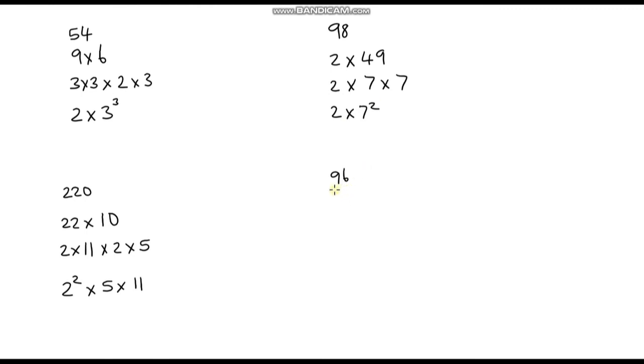And the last one is 96. Again, I'm going to use the fact that it's even, so it's a multiple of 2. If 98 was 2 times 49, 96 is going to be 2 times 48. So 48 can be broken down, and there's lots of different ways we can break down 48; it's got a lot of factors. I'm going to choose 6 times 8, so 6 is the same as 2 times 3.